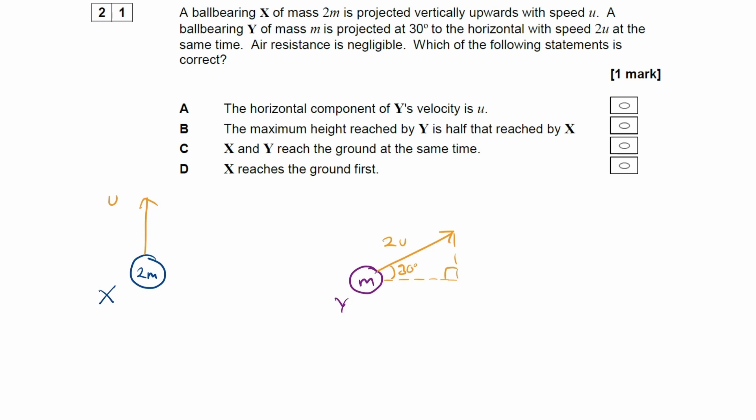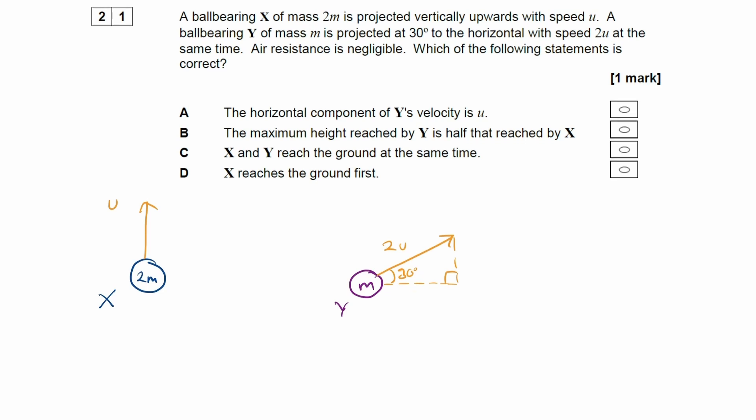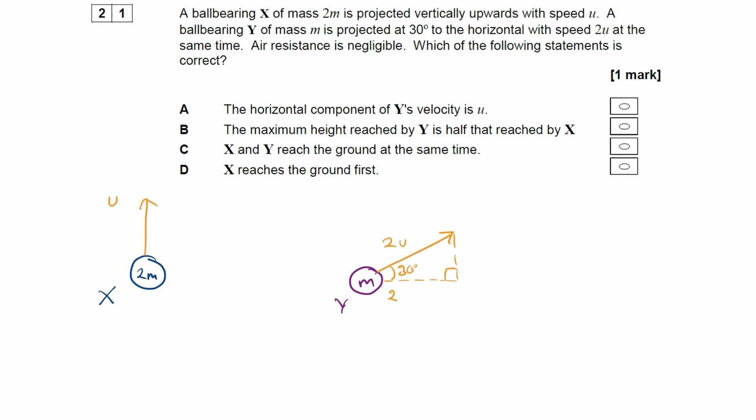We can use Sohcahtoa. We can use the shortcut where if we have the adjacent, we can just straight away call that side hypotenuse times cos 30. And if you're not sure how I got that, just use Sohcahtoa. If I were to work that out, if I did 2 times cos 30, that would give me root 3. So this is root 3u.